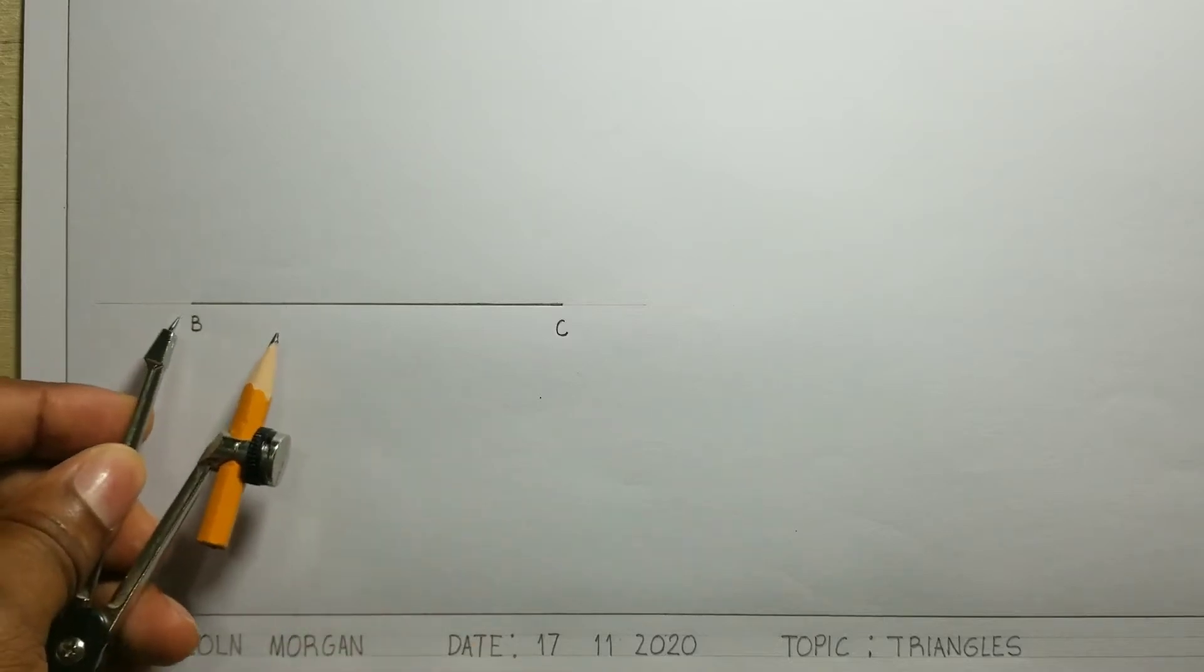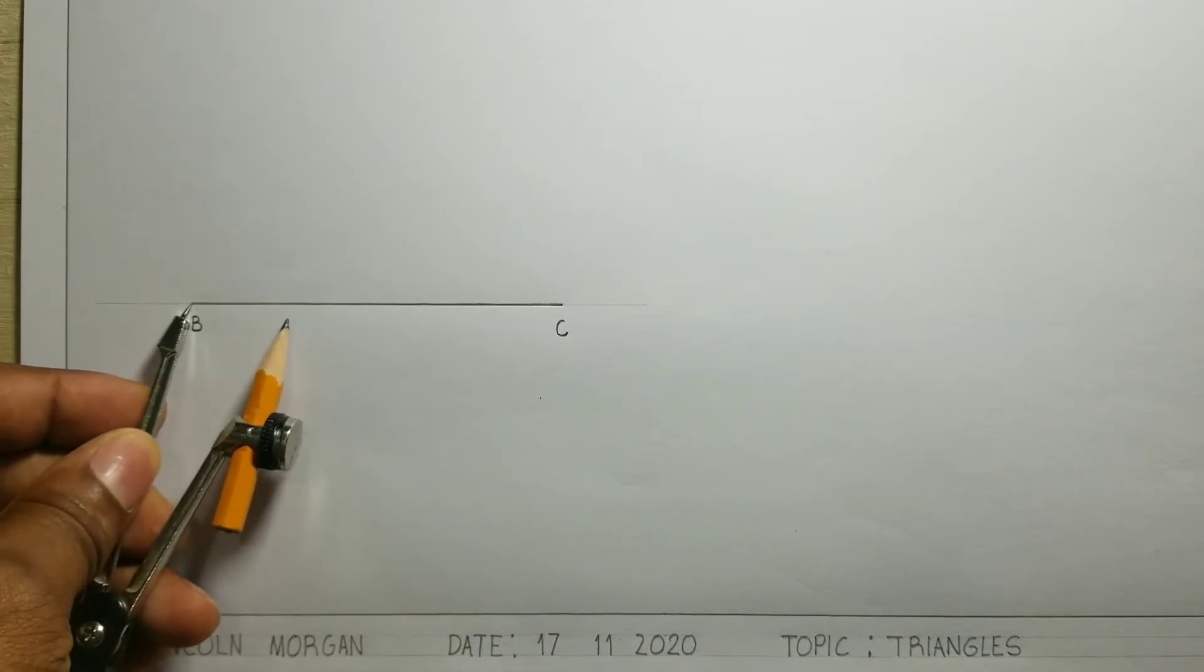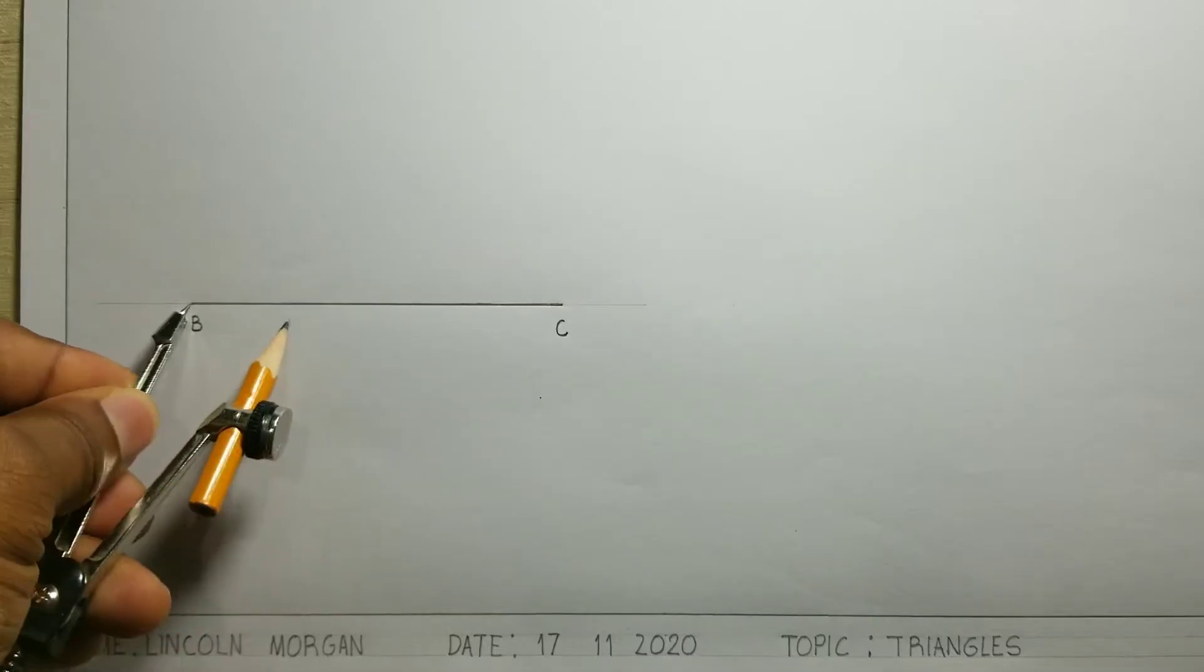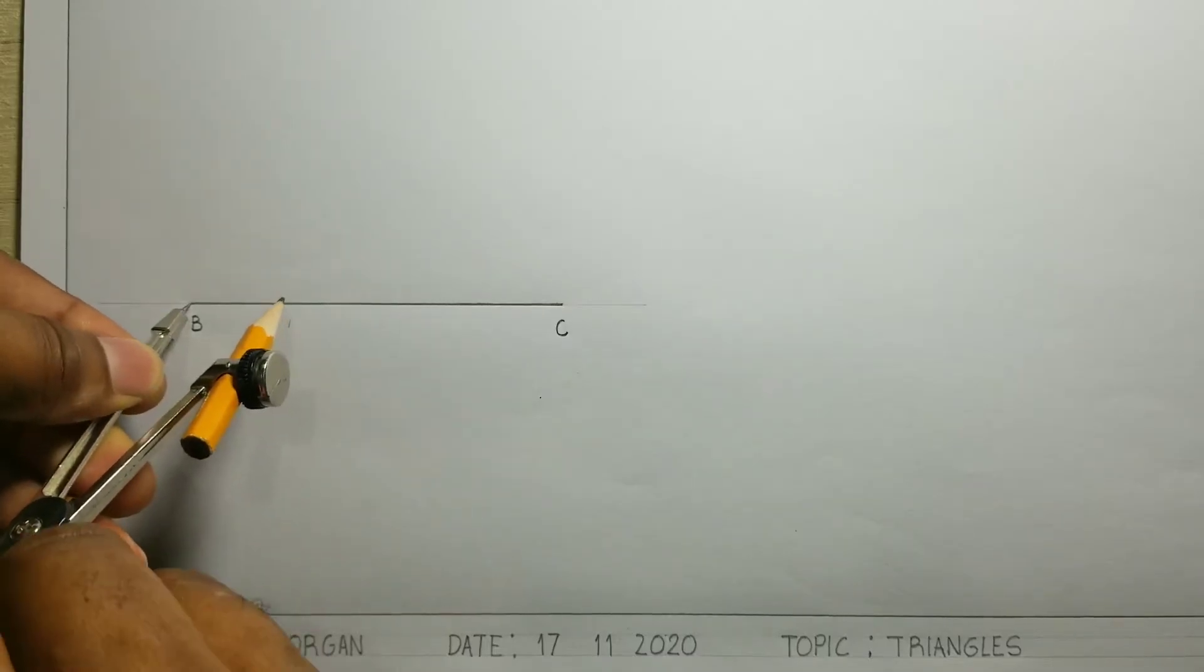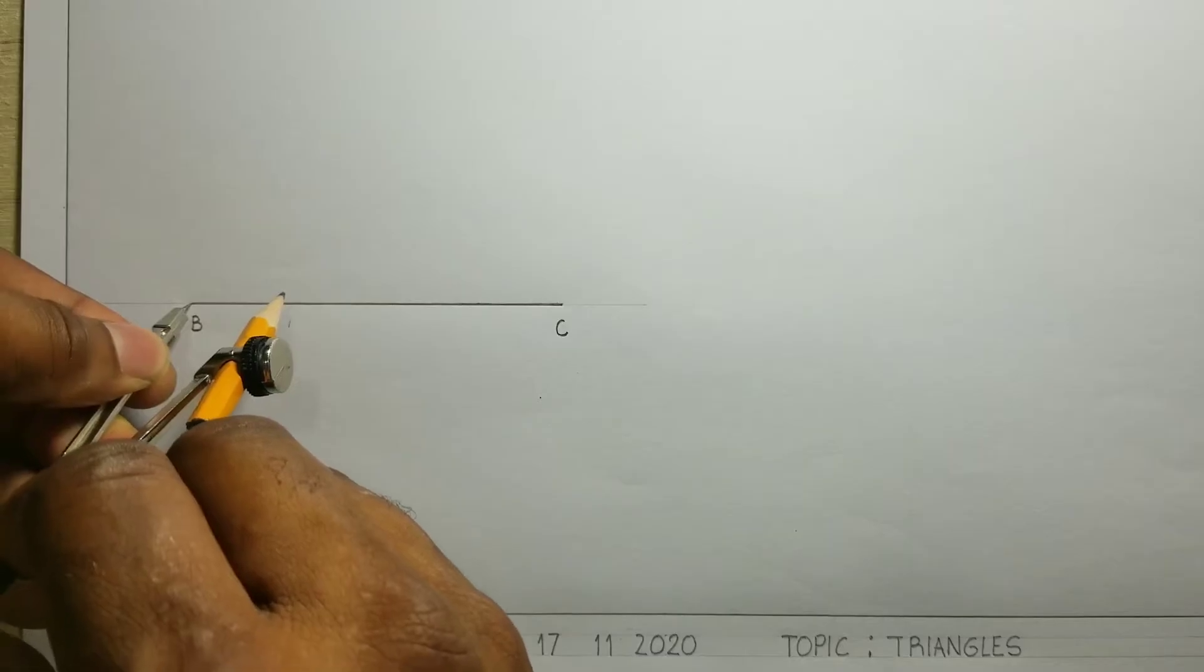To a convenient radius, put the compass center at B. The compass point at B. B is the center for this arc. Then scribe an arc from the AB line.